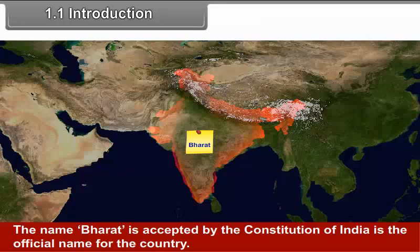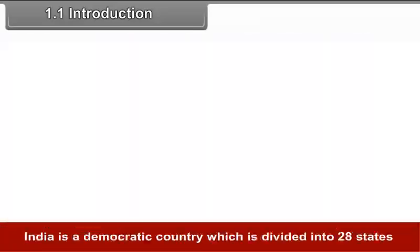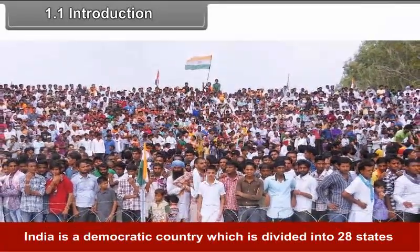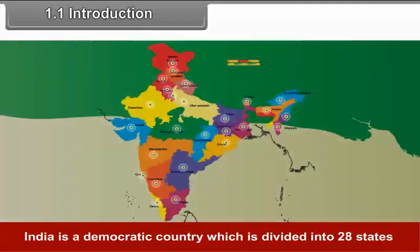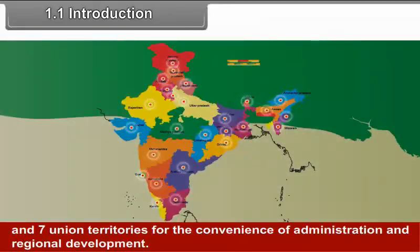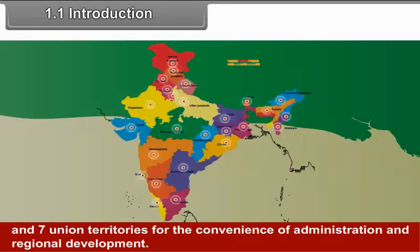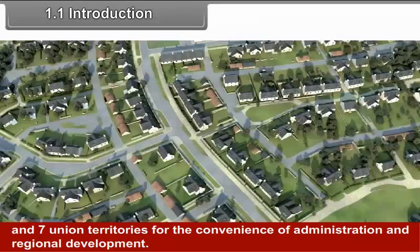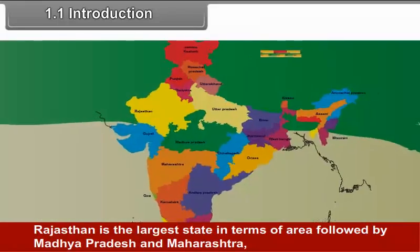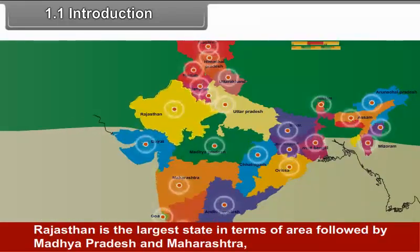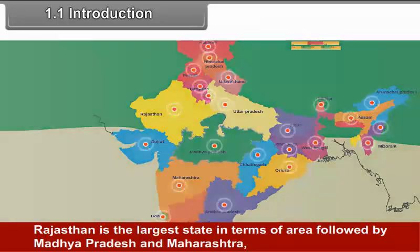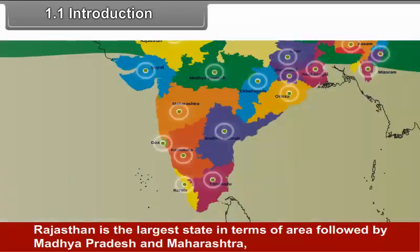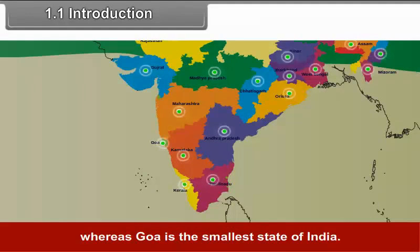All these together contribute to the progress of our homeland. The name Bharat is accepted by the Constitution of India as the official name for the country. India is a democratic country which is divided into 28 states and 7 union territories for the convenience of administration and regional development.